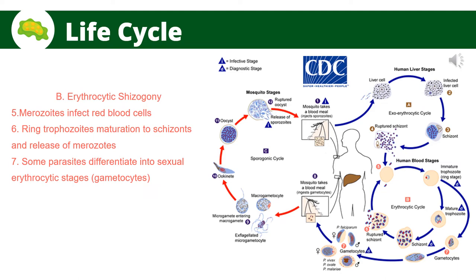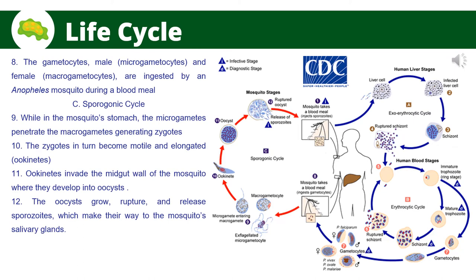Merozoites infect red blood cells wherein the parasites undergo asexual multiplication in the erythrocytes, referred to as erythrocytic schizogony. Ring-stage trophozoites mature into schizonts which rupture and release merozoites. Some parasites differentiate into sexual erythrocytic stages, producing gametocytes, which are responsible for the clinical manifestations of the disease. The gametocytes are ingested by an Anopheles mosquito during a blood meal. In the mosquito's stomach, microgametes penetrate macrogametes generating zygotes, which develop into ookinetes that invade the mid-gut wall, forming oocysts. The oocysts rupture and release sporozoites that travel to the mosquito's salivary glands, perpetuating the malaria life cycle.